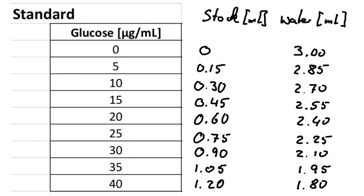If we carry on with these calculations and do that for all our data points, we should get a list of instructions for how we make up all these known concentrations. For example, to make up the 20 microgram per milliliter solution, we would need 0.6 milliliters of the stock solution and 2.4 milliliters of water to reach the total of 3 milliliters. We get all our concentrations for the known glucose concentrations with the corresponding calculations — and remember, it always needs to add up to 3 milliliters.